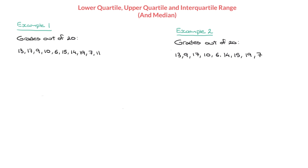In this video, we learn how to find the lower quartile, the upper quartile, and the interquartile range from a list of discrete data. And as we'll be seeing, in doing so, we'll also be finding the median. I've written two examples here, and the reason for that is because things look a little different depending upon whether we have an even number of values or an odd number of values. So we'll be looking at both here. Let's get started.